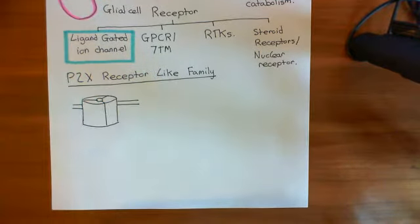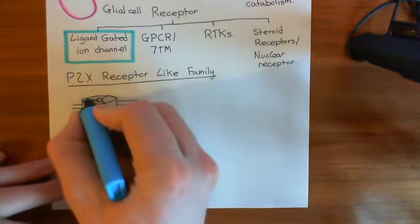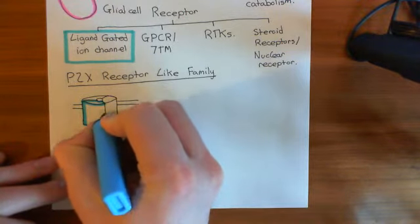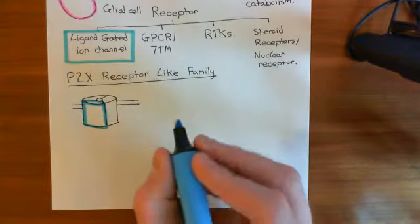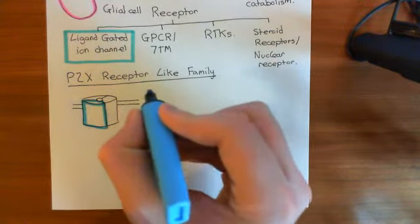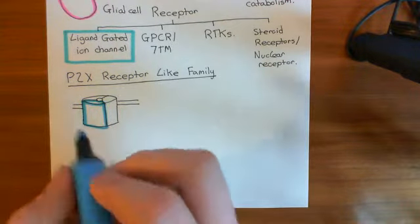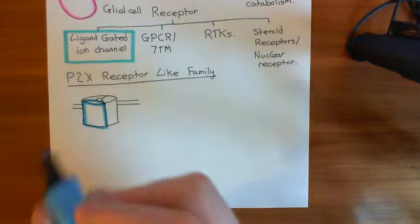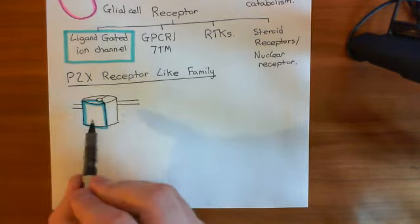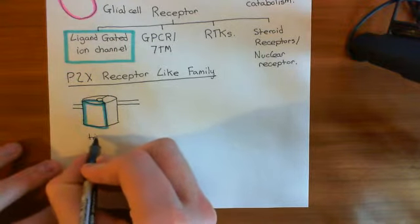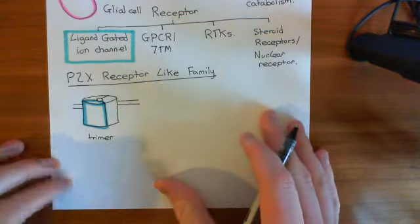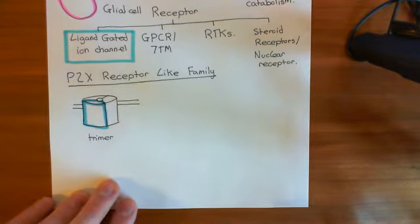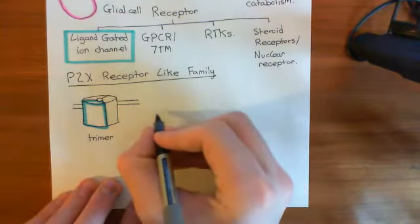What is the structure of just one of these proteins? There are many ligand-gated ion channels that you would count as being in the P2X receptor-like family, and they all have this basic structure. If you take any ligand-gated ion channel in this P2X receptor-like family, it will be a trimer. If we look at the proteins which make up the trimer, the membrane-spanning topology of these subunits has a particular structure.